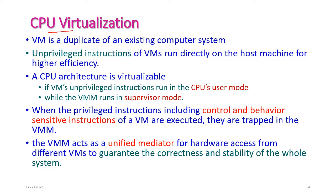In CPU virtualization, the VMM is a duplicate of an existing computer system. On top of the physical hardware machine, we have a virtual machine, which acts as a duplicate of the existing hardware machine. Unprivileged instructions from the virtual machine can directly execute on the hardware machine, while privileged instructions make the CPU architecture virtualizable.